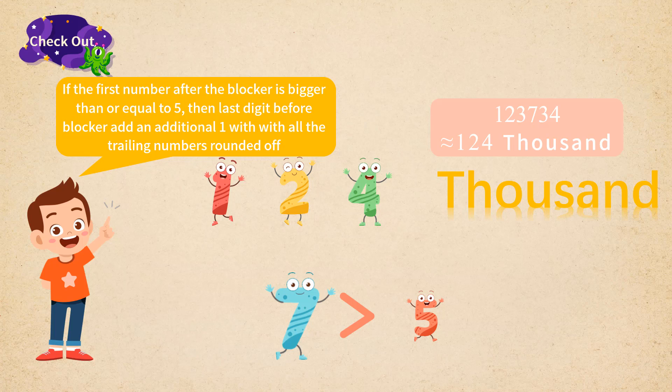that is, if the first number to the right of the blocker is bigger than 5, the last digit before the blocker would go forward by 1, and then round off all the trailing numbers.